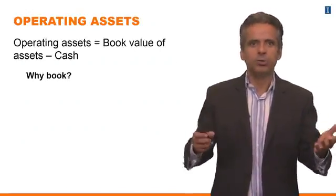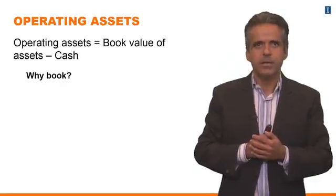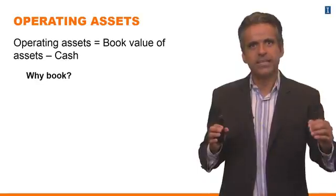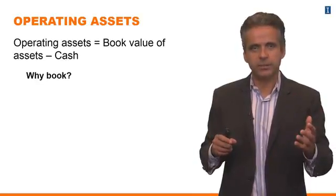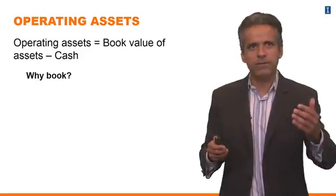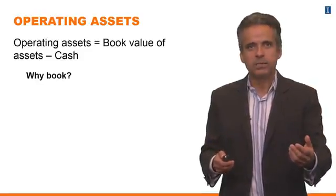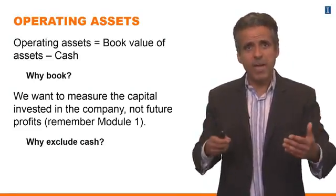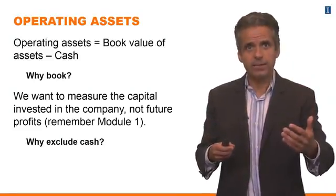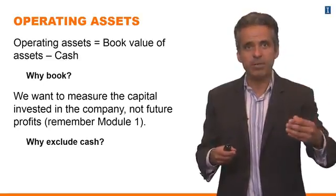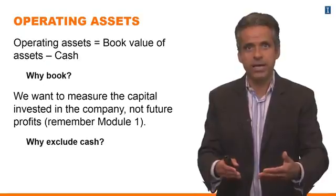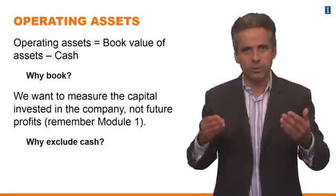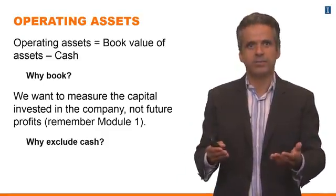Why are we using operating assets? The definition: operating assets is the difference between book value of assets and cash. Why are we using book value? In this type of application, when we are measuring current profitability, what you want to do is measure the capital that is invested in the company right now. You don't want to include future profits in your measure of assets, so you definitely do not want to use market values.